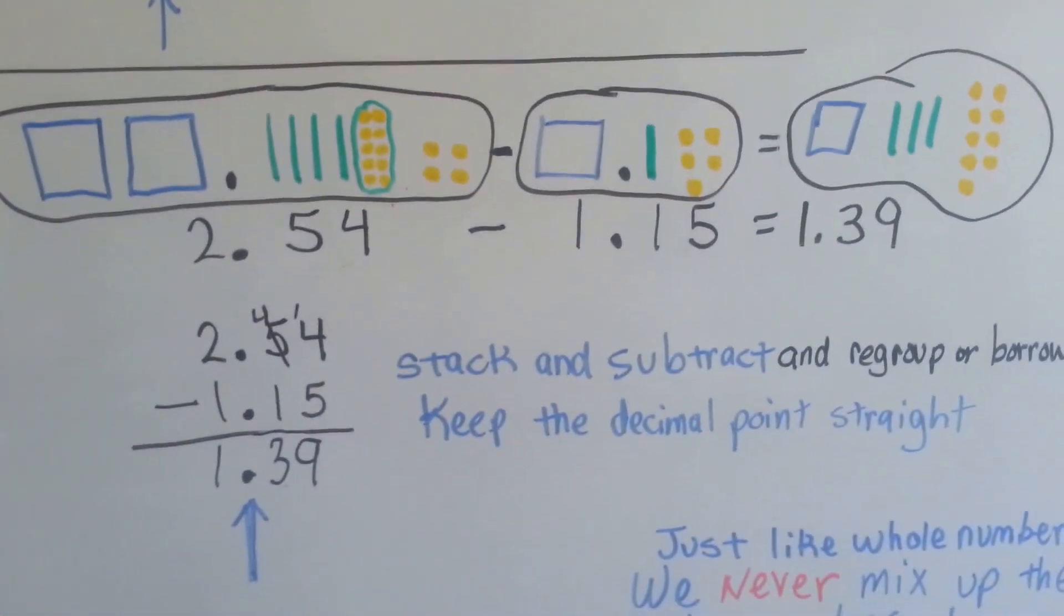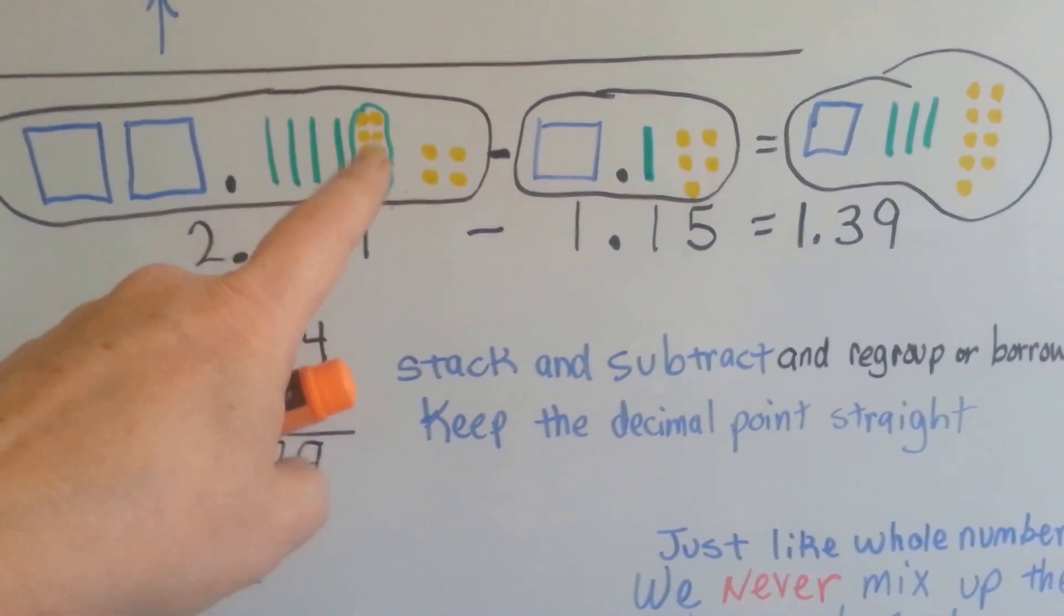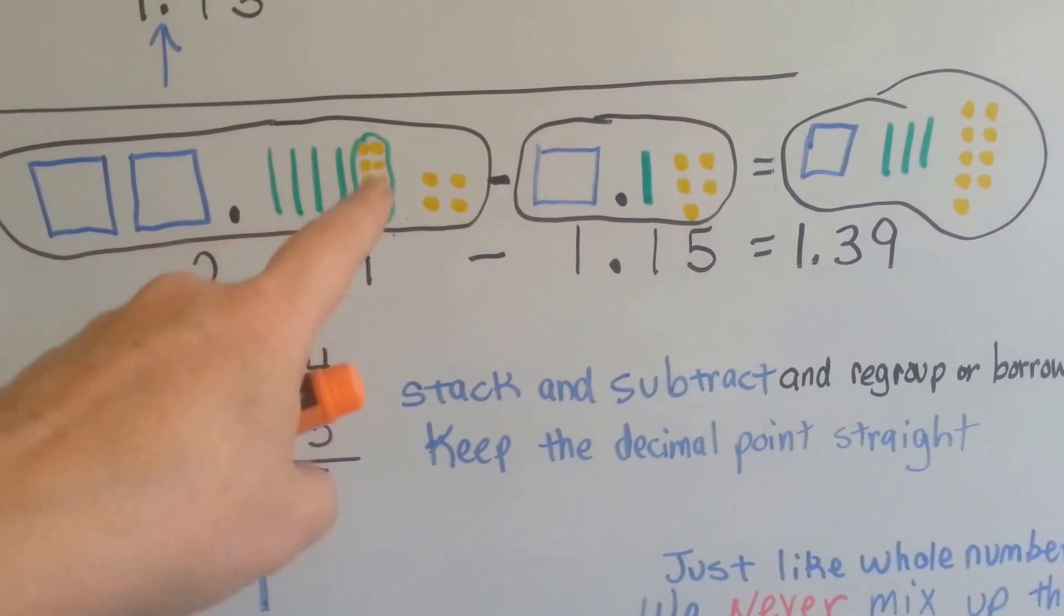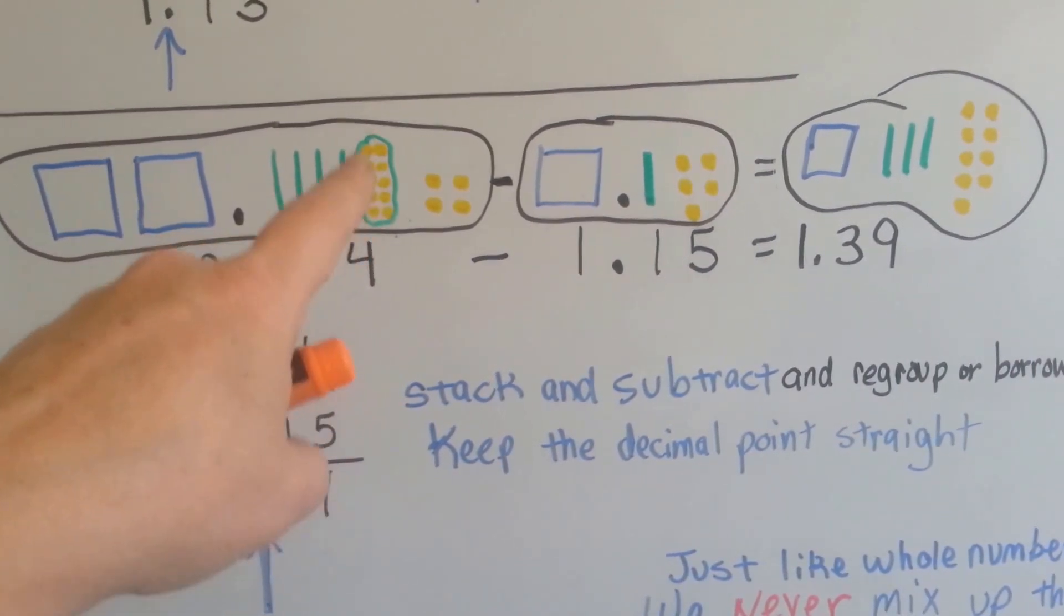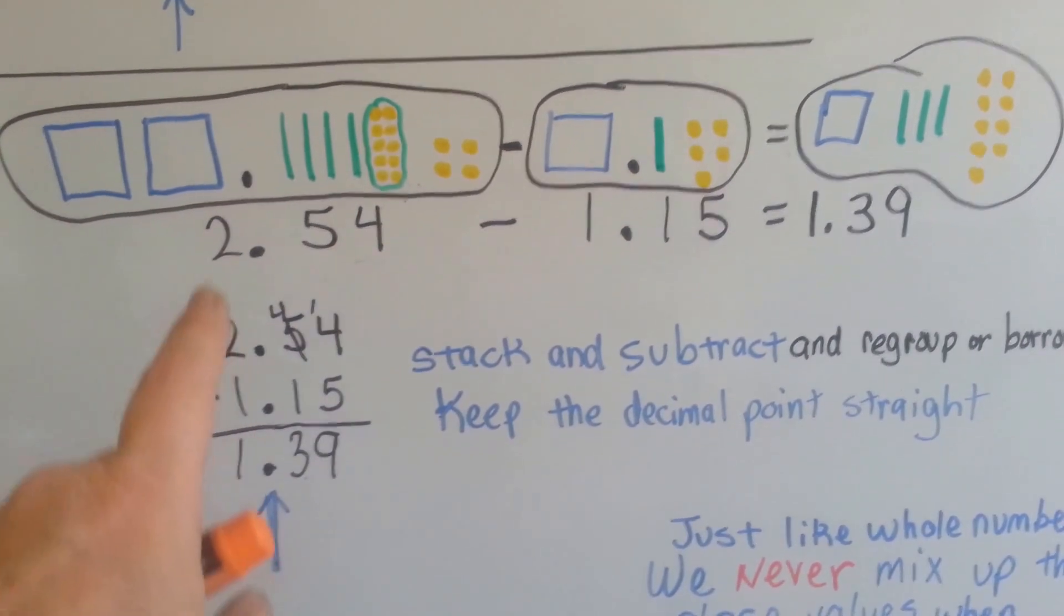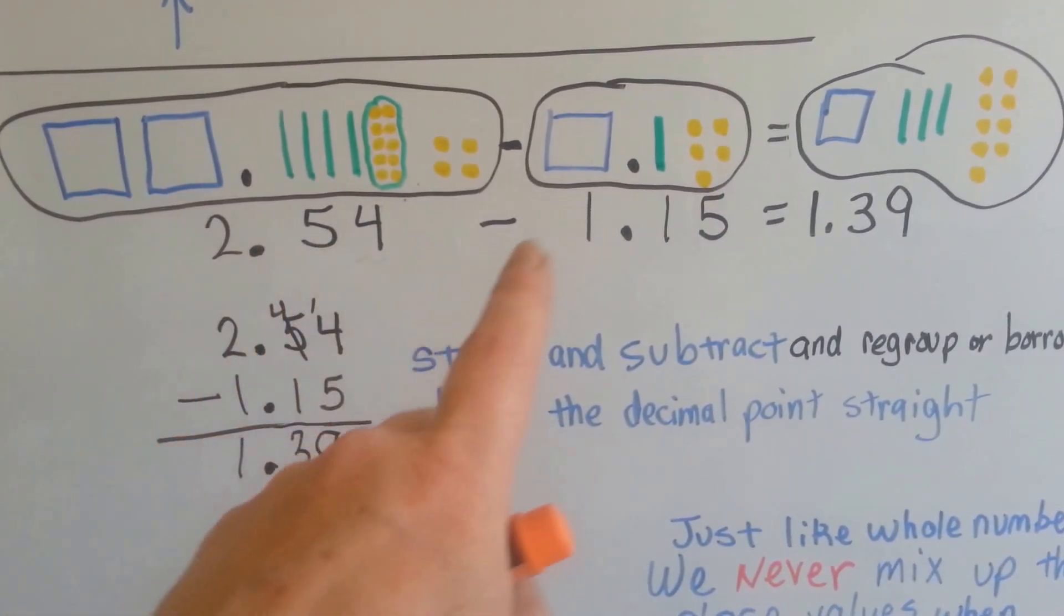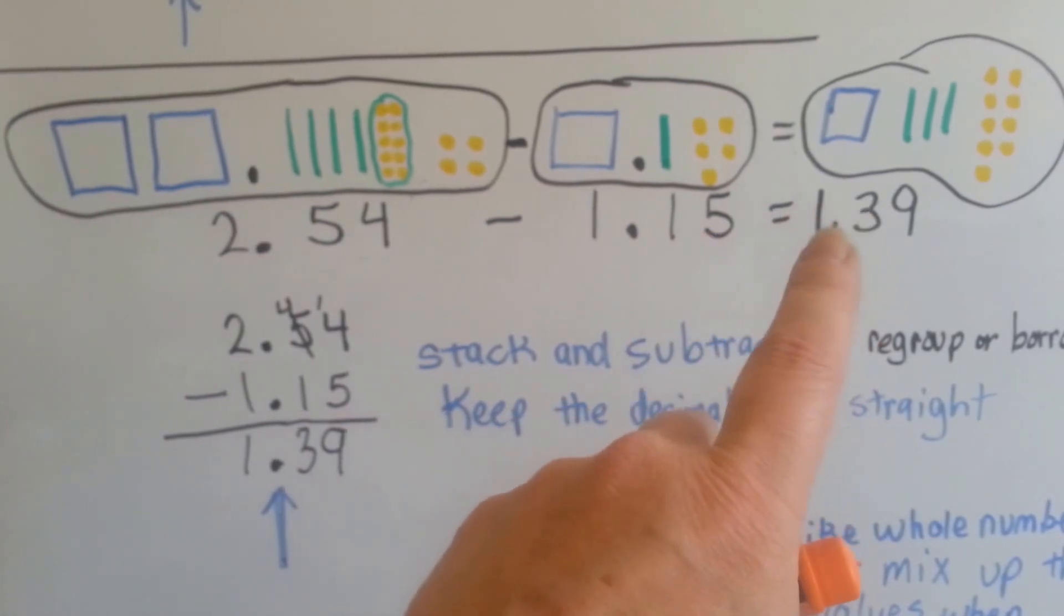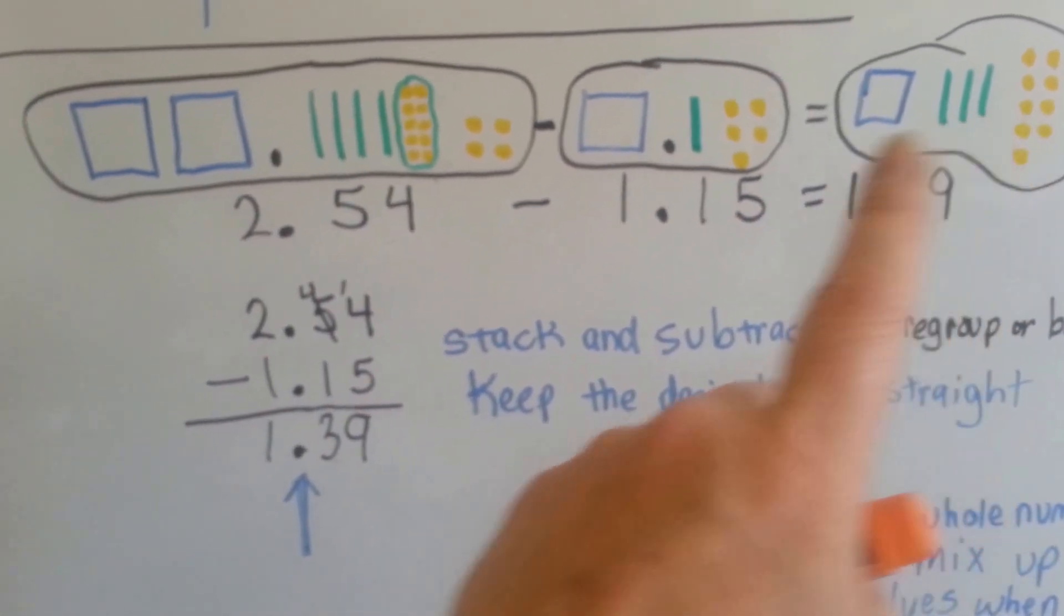If we needed to borrow or regroup, then we could start by making ten of these little guys to represent one green one, so that we can take from it right away. If we had two and fifty-four hundredths and wanted to take away one and fifteen-hundredths, it would equal one and thirty-nine hundredths, and this is how.